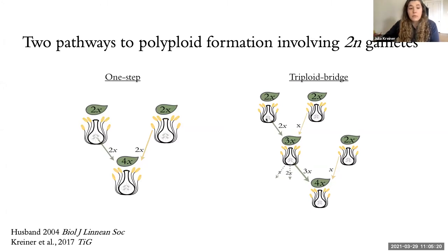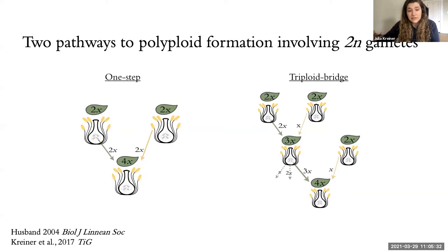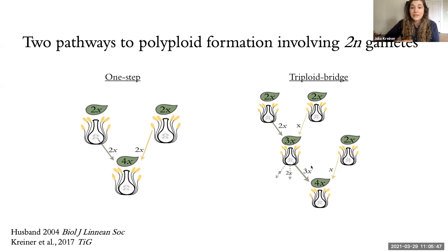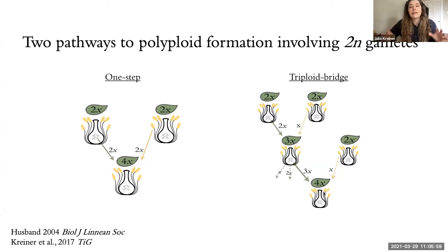With the triploid bridge — the two-step process — you might have a female unreduced gamete but a male normal reduced haploid gamete that unite to form a triploid. That triploid will have some issues with meiosis, producing 1x, 2x, or 3x gametes. The simplest two-step process is a triploid individual producing an unreduced 3x gamete that unites with a normal haploid gamete, producing a tetraploid individual. There are a lot of different ways in which this can happen.